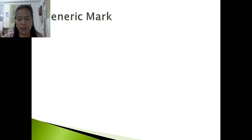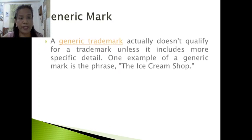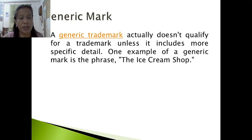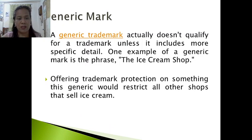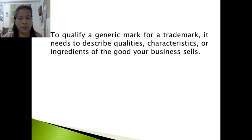The first category is the generic mark, which does not qualify for trademark unless it includes more specific detail. One example is the phrase 'The Ice Cream Shop' — offering trademark protection on something this generic would restrict all other shops that sell ice cream products. To qualify a generic mark for a trademark, it needs to describe qualities, characteristics, or ingredients of the goods your business sells.